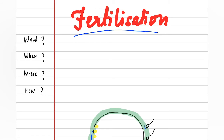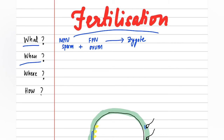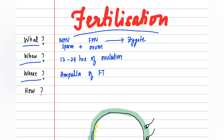What is fertilization? Fertilization is the process of the fusion of the male pronucleus, that is the sperm, plus the female pronucleus, that is the ovum, to form a zygote. When does fertilization occur? Fertilization occurs usually within 12 to 24 hours of ovulation. Where does fertilization occur? Fertilization occurs in the ampulla of the fallopian tube.